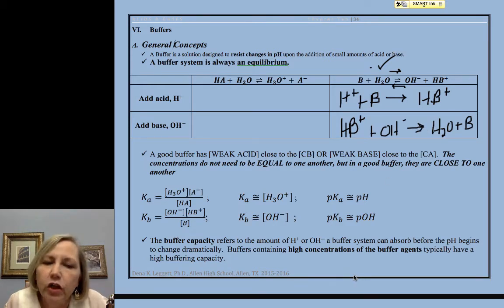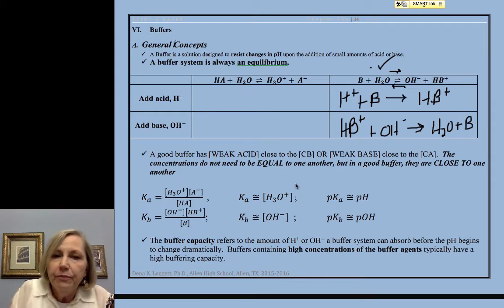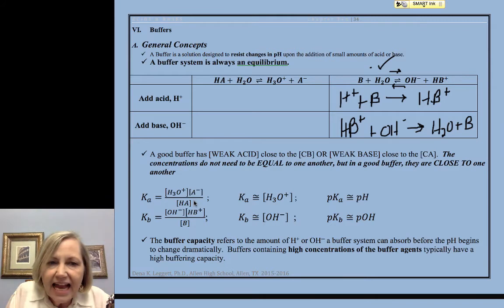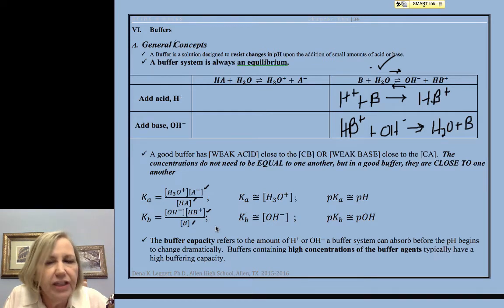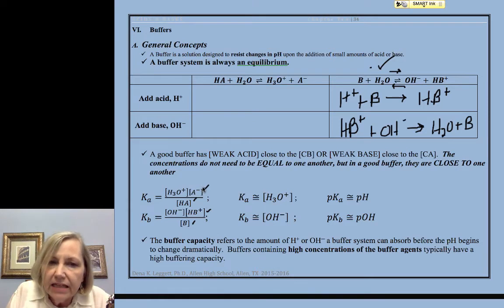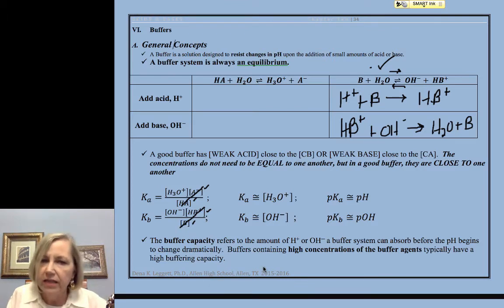Now, how do we pick a good buffer? Well, we need to have both the acid and its conjugate or the base and its conjugate. And they do not need to be ideal. They do not need to be equal to one another. But as a starting point, you would want them equal. So if they're equal to one another, they'll cancel.